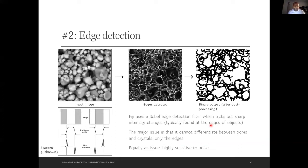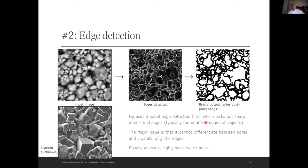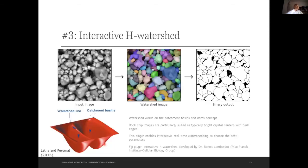Edge detection works on a different basis. At areas where intensity changes sharply — such as at a crystal boundary going to pore — the filter picks up on that shift. The problem is it cannot differentiate between pores and crystals; there are only edges. You end up with images that look like all crystals, so it doesn't do a great job. It is also highly sensitive to noise, though it can be useful in situations where you only see crystals and edges.